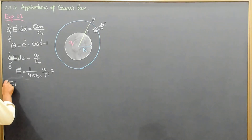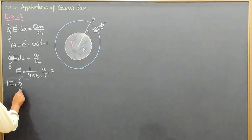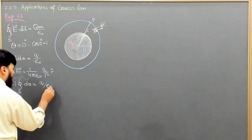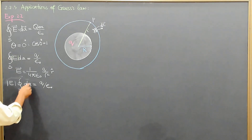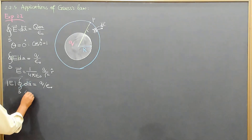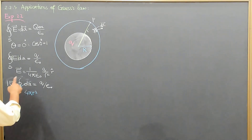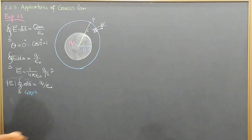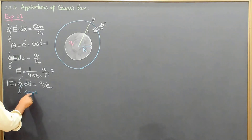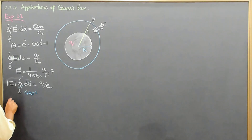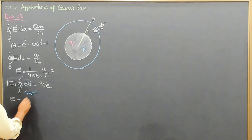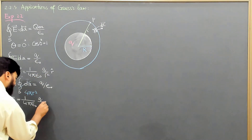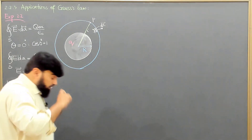So this E will go out of the integral and we have the integral on a closed surface, giving E times dA equal to Q over epsilon naught. The integral of dA over the sphere equals 4π r², because dA = r² sin θ dθ dφ, and integrating sin θ dθ dφ gives 4π. So the area of the sphere is 4π r², and from here the electric field comes out to be 1 over 4π epsilon naught times Q over r².